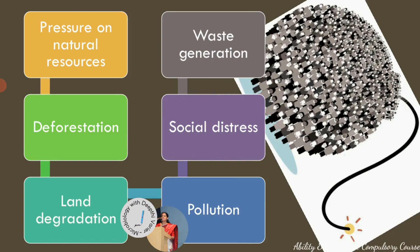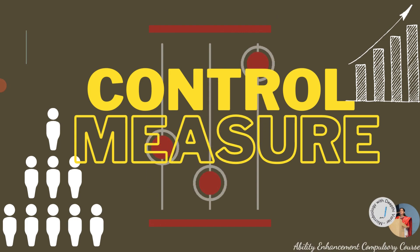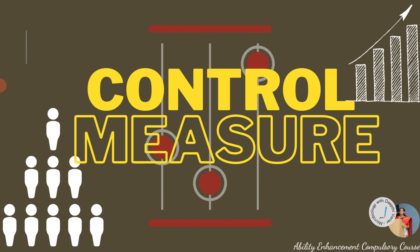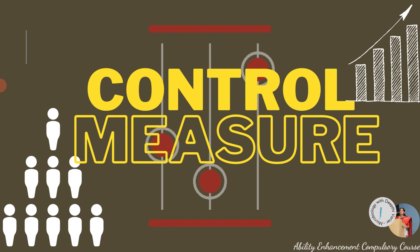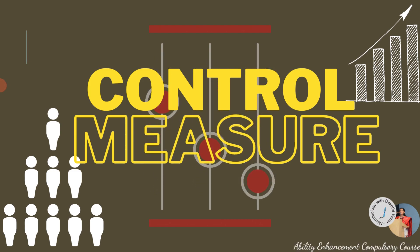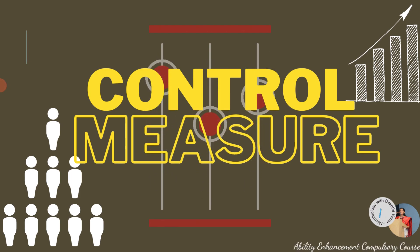These are some of the ill effects of overpopulation. The control measure — as the Malthusian theory has told us — is to strictly ensure there are positive checks on the growth of human population. We need to have some kind of checks in place; otherwise, nature will do the checking. As per the Malthusian theory, nature's checks include war, disease breaking out, or famine — these are the checks nature sets in.